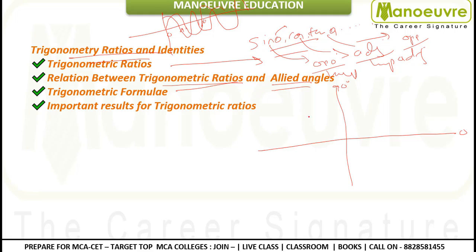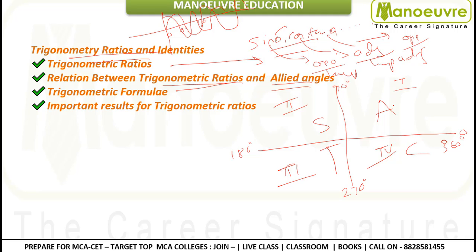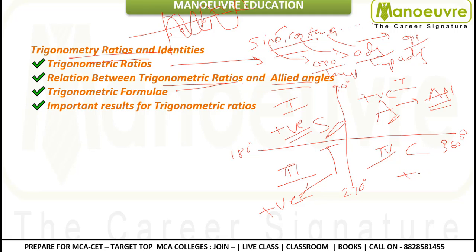The four quadrants are: first quadrant (0° to 90°), second quadrant (90° to 180°), third quadrant (180° to 270°), and fourth quadrant (270° to 360°). To remember the sign of trigonometric ratios in each quadrant, use the acronym 'All Smart Trigo Classes': All ratios positive in Q1, Sine positive in Q2, Tan positive in Q3, Cos positive in Q4.